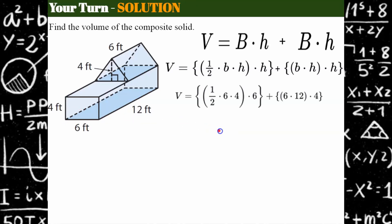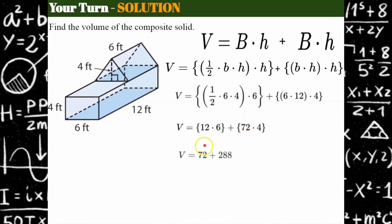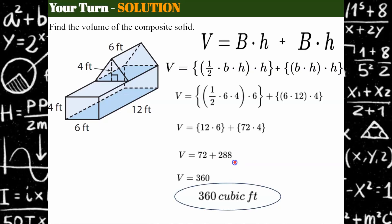The height of the prism connects the two triangular faces, so that's 6, and the rectangular base is 6 by 12 with a height of 4. Now that I've identified all the parts I just need to do the math. Half of 6 times 4 is 12 times my height of 6. 6 times 12 is 72 times my height of 4, giving me that the triangular prism has a volume of 72 and the rectangular prism has a volume of 288. Adding them together gives a composite volume of 360 cubic feet.